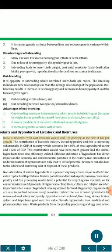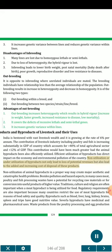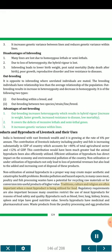Products and by-products of livestock and their uses. India is bestowed with vast livestock wealth and it is growing at the rate of 6% per annum. The contribution of livestock industry including poultry and fish is increasing substantially in GDP of the country, which accounts for greater than 40% of total agricultural sector and greater than 12% of GDP. This contribution would have been much greater had the animal by-products been also efficiently utilized. Efficient utilization of by-products has direct impact on the economy and environmental pollution of the country. Non-utilization or under-utilization of by-products not only leads to loss of potential revenues but also leads to added and increasing costs of disposal.